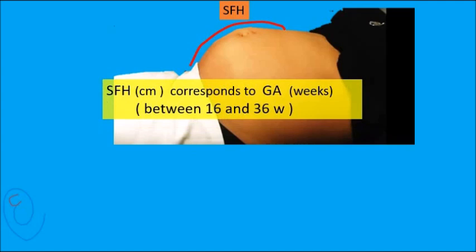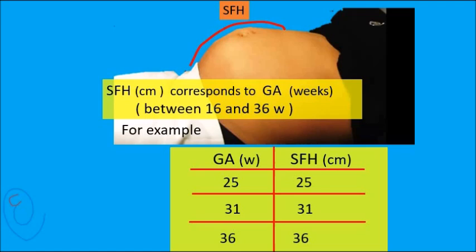Normally, the SFH in centimeters corresponds to gestational age in weeks between 16 weeks and 36 weeks. For example, a normal SFH at 30 weeks is about 30 centimeters.